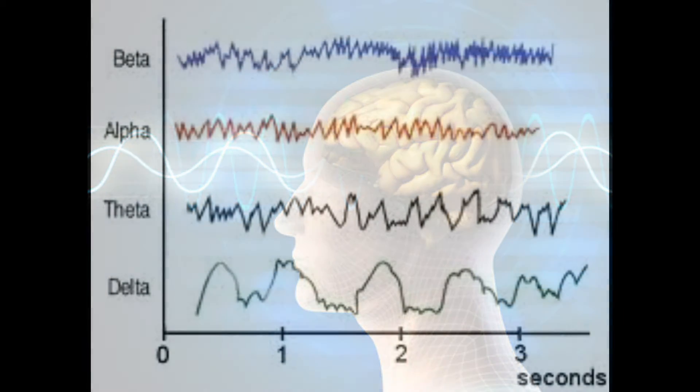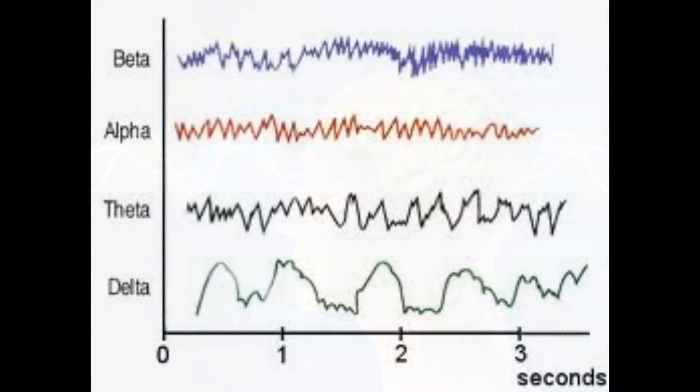Now we are going to see some of the EEG signals. First, delta. It goes from less than 4 hertz. This is when there is a deep sleep state of normal adults.